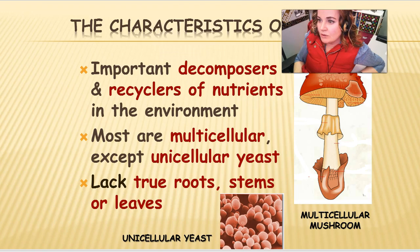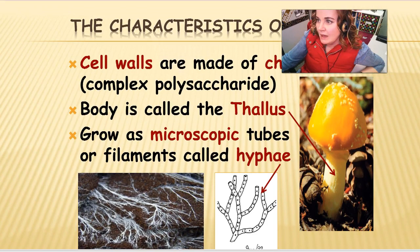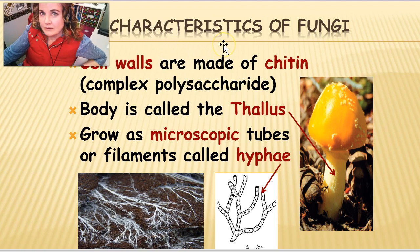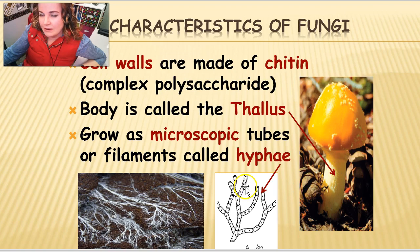Most are multicellular, except for unicellular yeasts. They don't have true roots, stems, or leaves, although sometimes they look like they do because they have root-like structures, a stem-like structure, and a body-like structure that could be mistaken for a plant. Their cell walls are made of chitin — the same material that makes up the exoskeletons of insects. When you look at a mushroom or fungus, the body part is called the phallus — that stem-like part — and every part of the fungus is made up of microscopic tubes called hyphae, which are connected end-to-end.